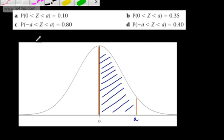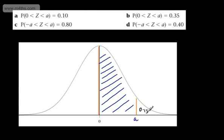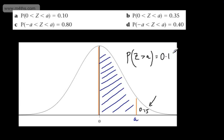What will be in our tables is the area trapped under the curve to the right of A. That is going to be 1/2 minus 0.35, which gives us 0.15. So all we need to do now is look this up in our table, and this will give us the value of A. Essentially, the probability that Z is greater than the observed value of A is 0.15.